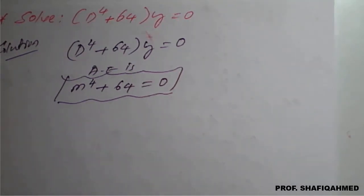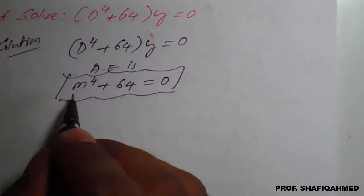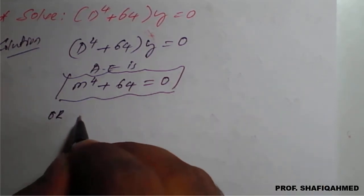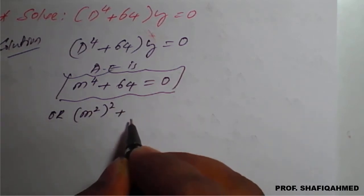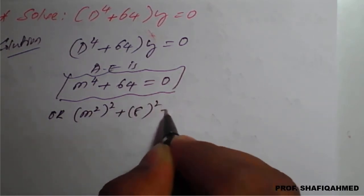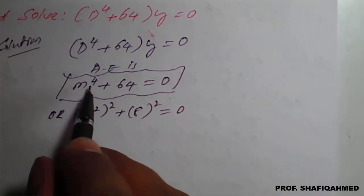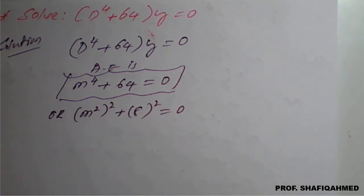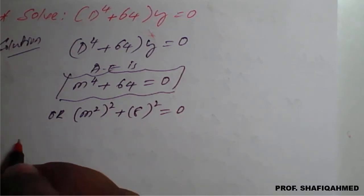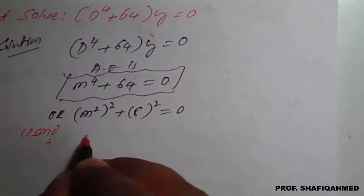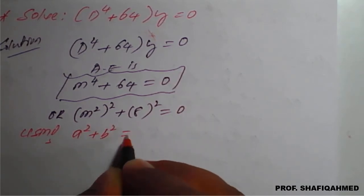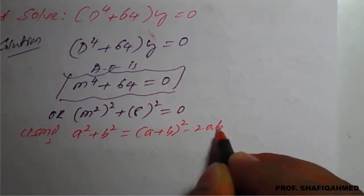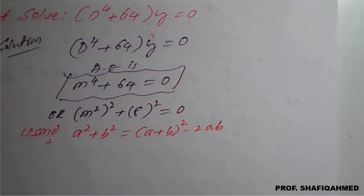For this, I will use one of the important standard approaches. So m raised to 4 plus 64, I will write it as m square whole square plus 8 square equal to 0. So m square whole square will be m raised to 4, and 8 square will be 64. This is of the standard form a square plus b square. Using the a square plus b square formula: a square plus b square is given by a plus b whole square minus 2ab.